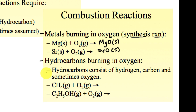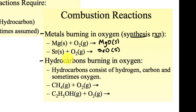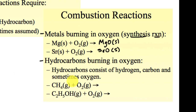Hydrocarbons are typically your combustion reactions. Hydrocarbons consist of hydrogen, carbon, and usually oxygen as well — so you'll see carbon, hydrogen, and oxygen. For metals, it's simple: the metal burns or combusts with oxygen to make a metal oxide. So the product is a metal oxide.